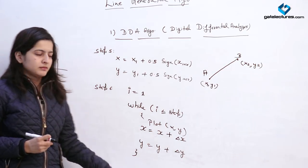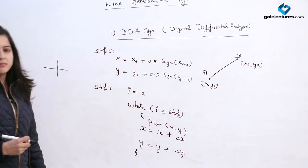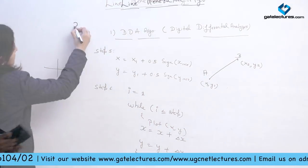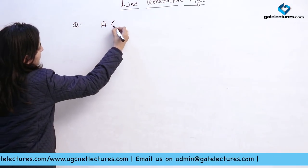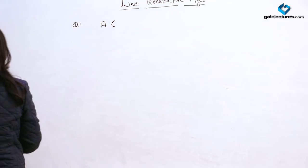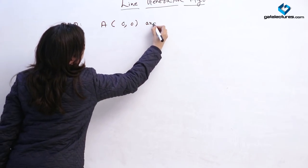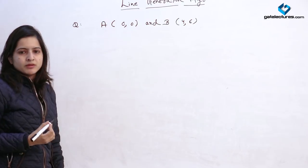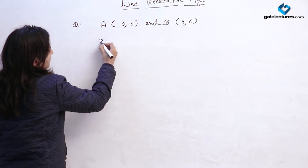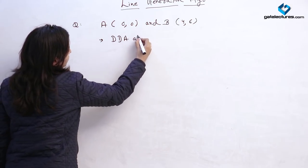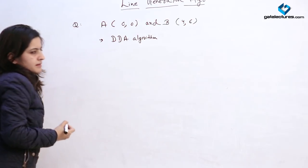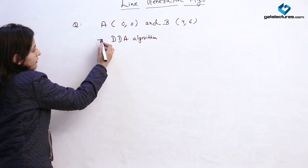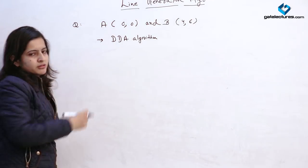We will see a numerical example for understanding this algorithm, and then consider a numerical from earlier UGC NET exams. Consider the endpoints of a line: A is (0, 0) and B is (4, 6). Rasterize this line using the DDA algorithm. We will calculate the number of iterations and the pixel values we will plot for formation of this line.